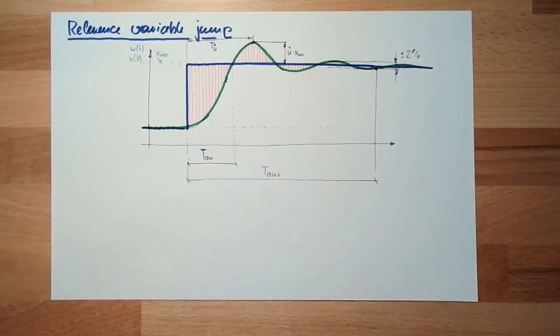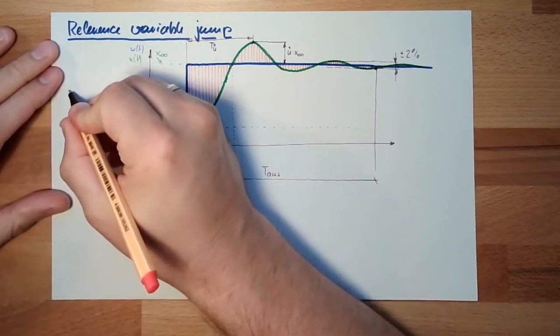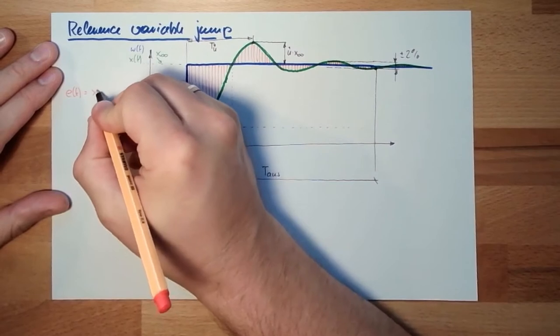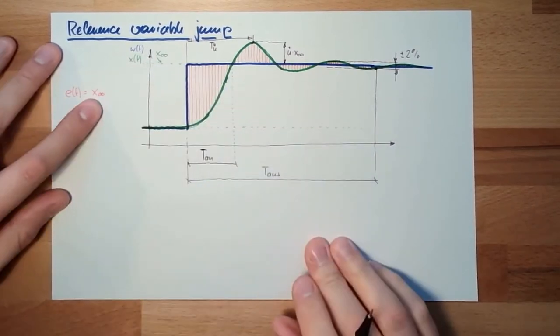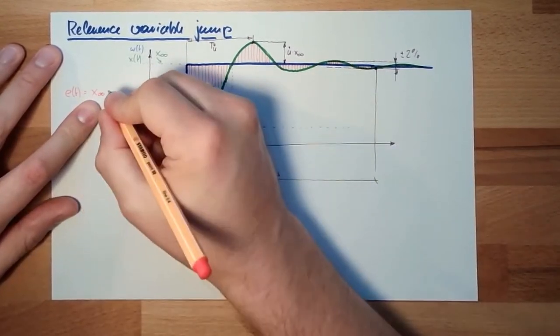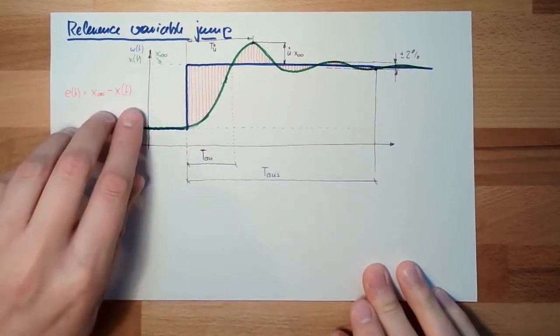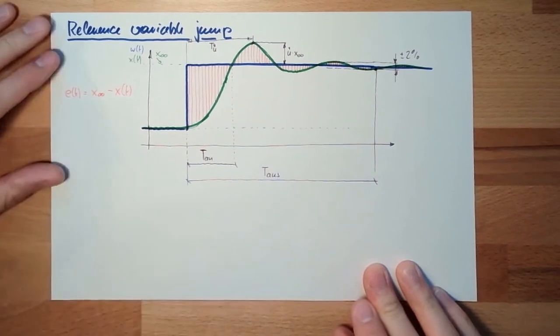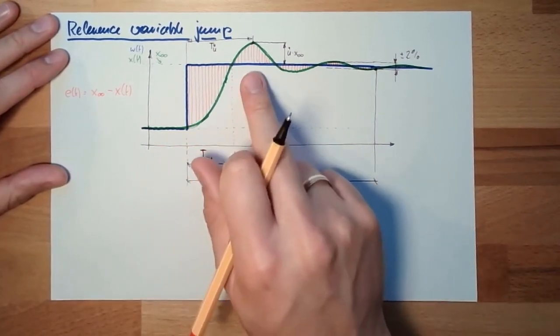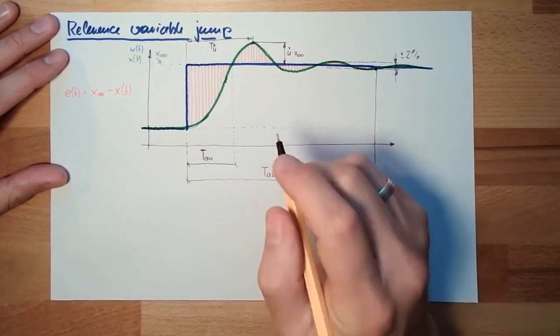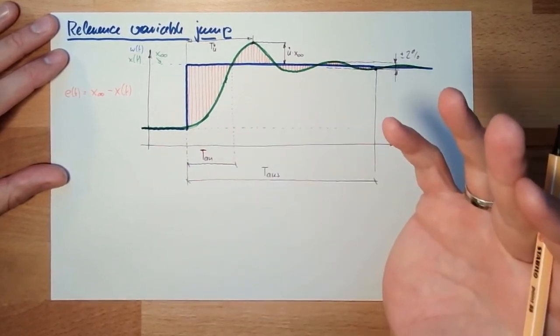So the error is unlimited minus X from T. This is the control error. And we said we are not summing up simply, but for instance, we can sum up the absolute error.